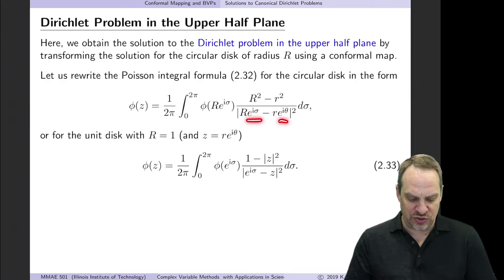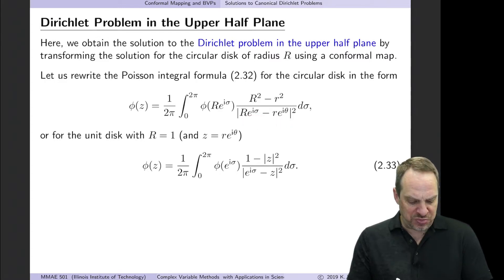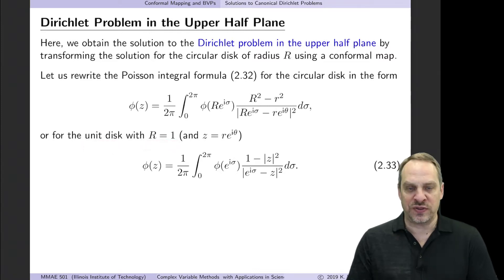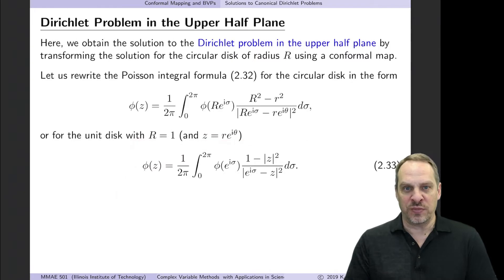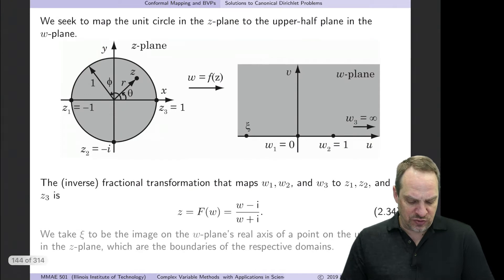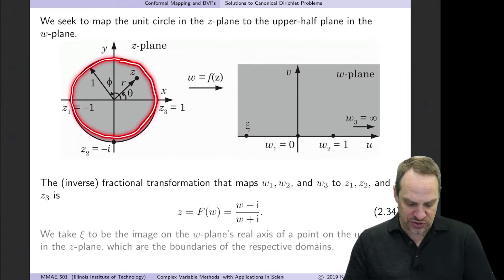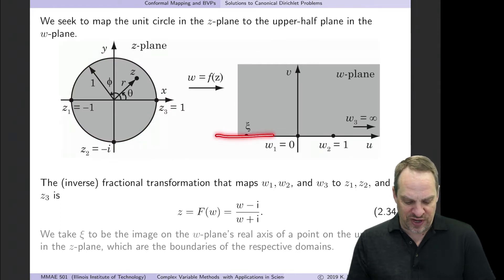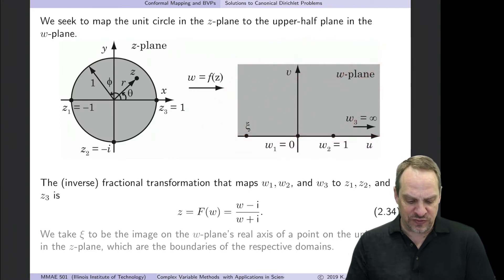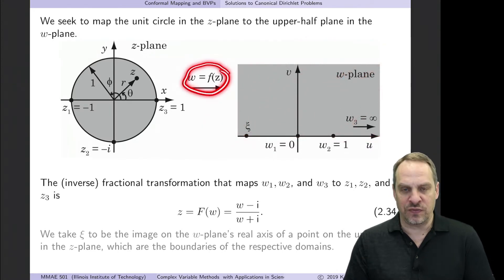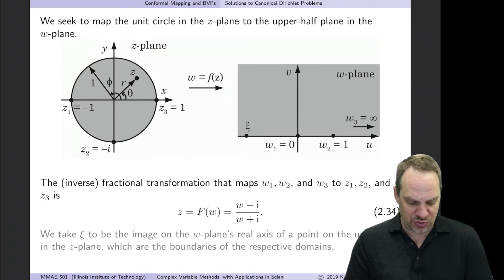You'll notice I've written the sines and cosines as exponentials here. Then we apply it to a unit disk, so a unit disk has radius of 1. This gives us a somewhat simplified form of the Poisson integral formula for the solution in the disk. We can then map the interior of the unit circle into the upper half plane — everything where v is positive — using a conformal mapping f of z. I'll show you what that is in a moment.